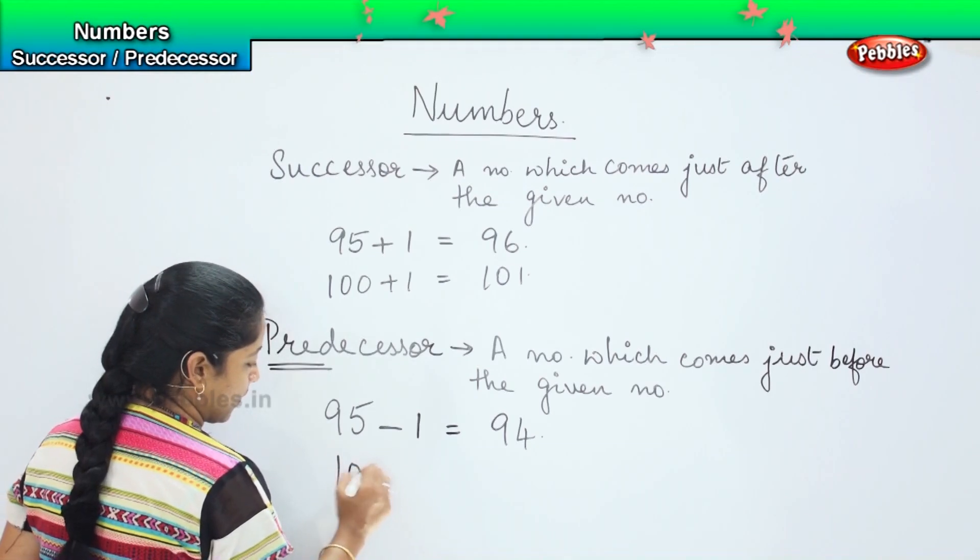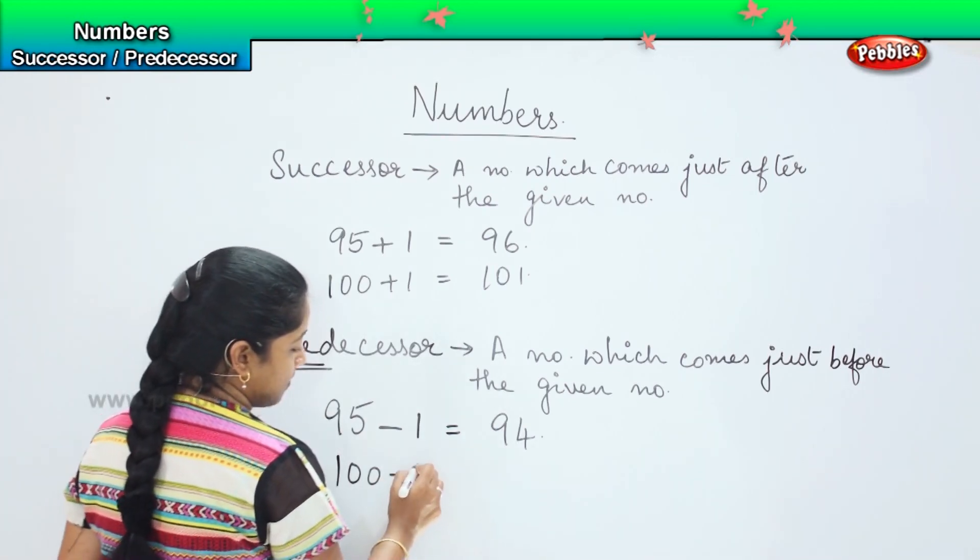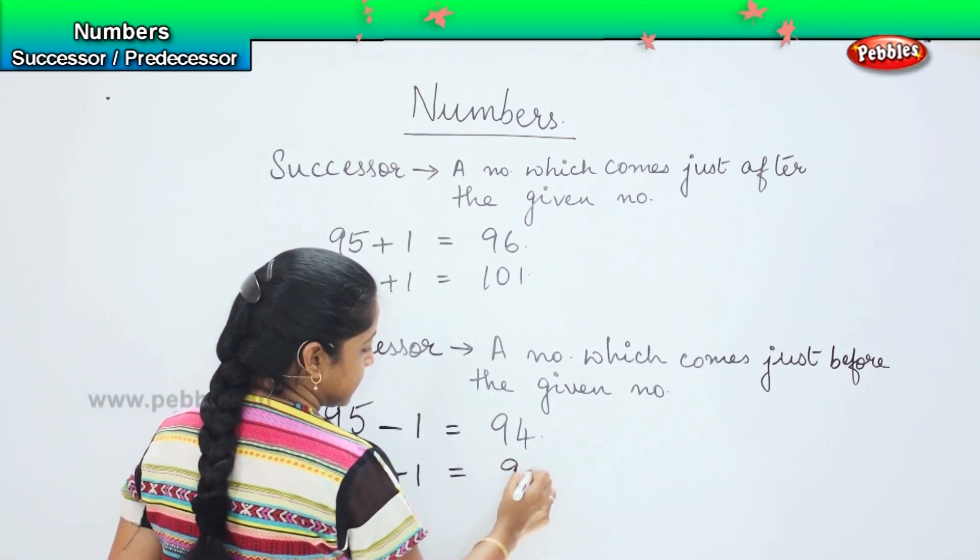Similarly, 100. So what is the number which comes immediately before 100? So 100 minus 1, it is 99.